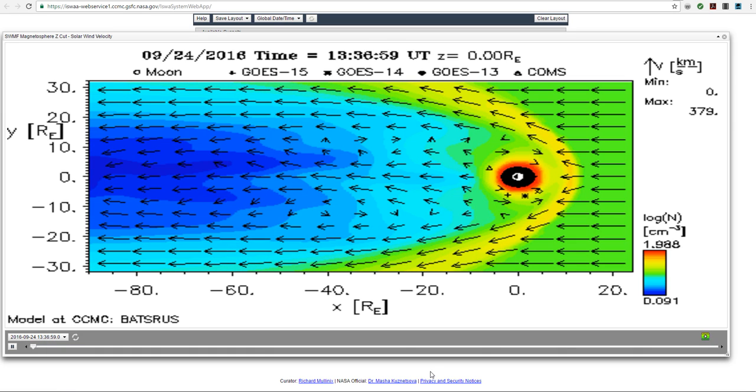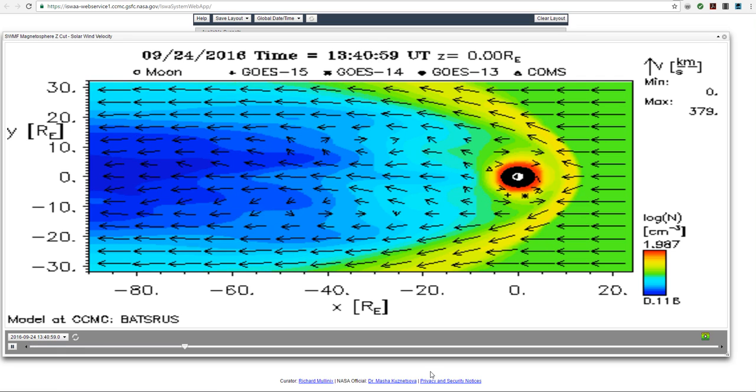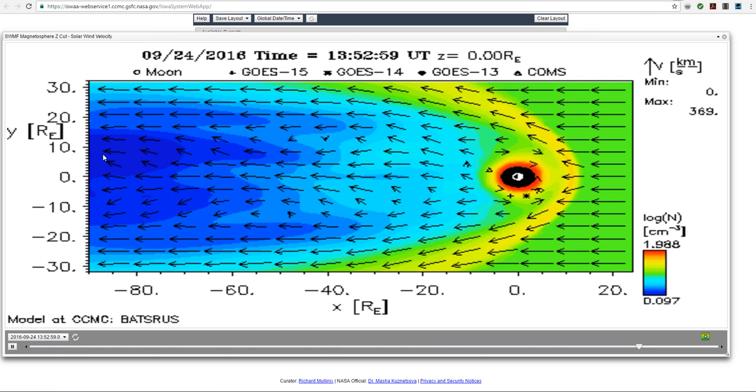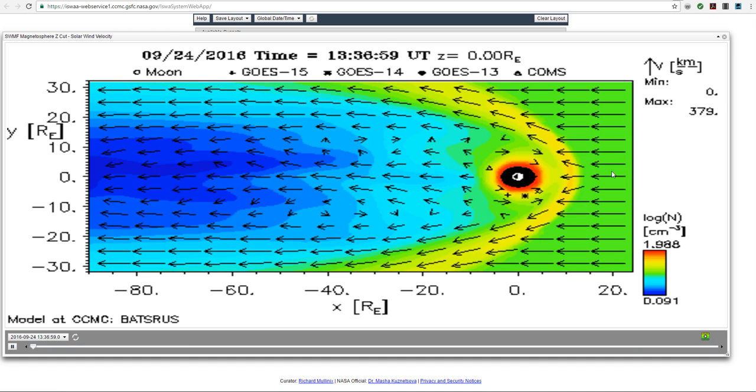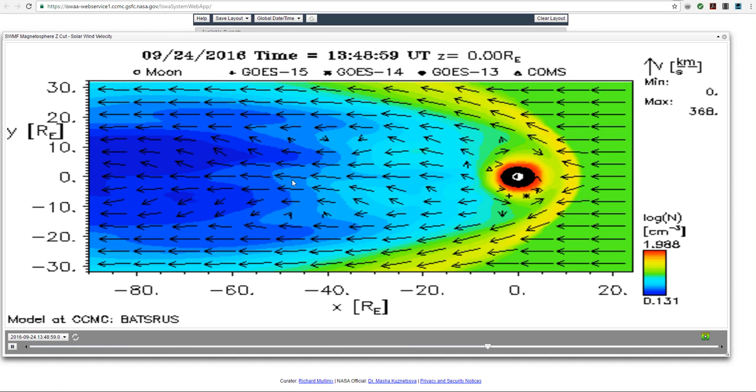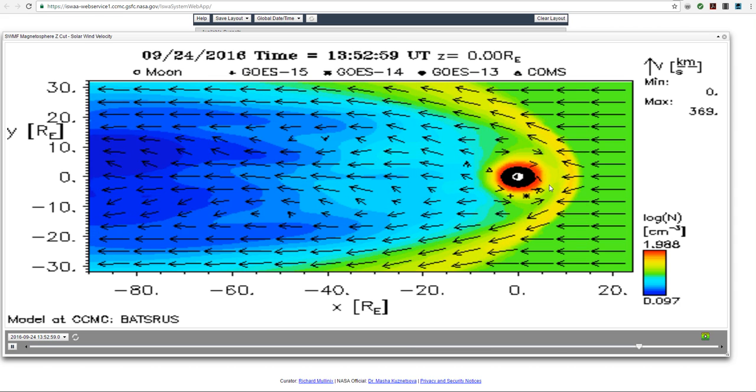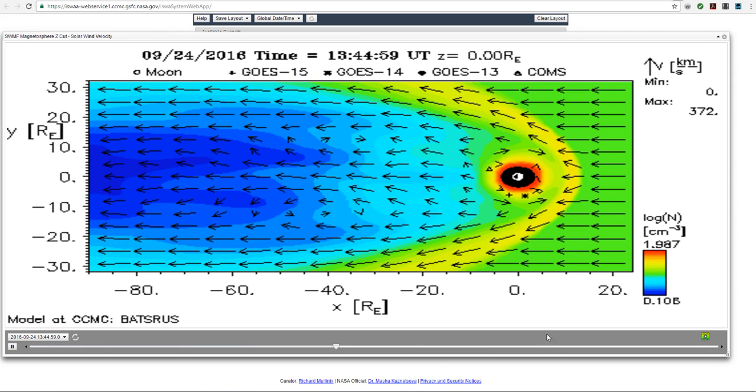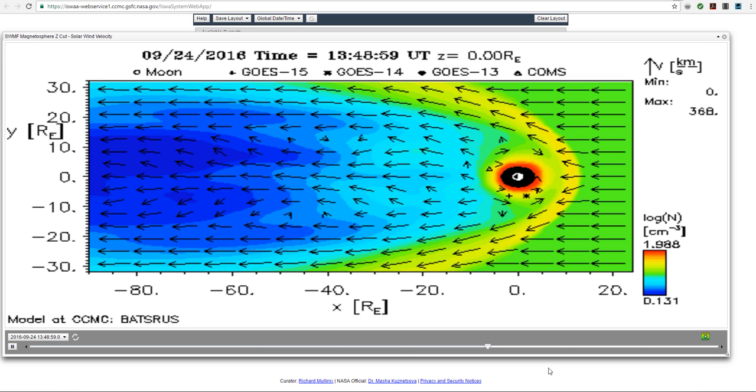That is simply that there is something going on. This is plasma and the solar wind should continue to go this way. This is the Earth's magnetosphere and you can see it's taking a real beating, it really is.